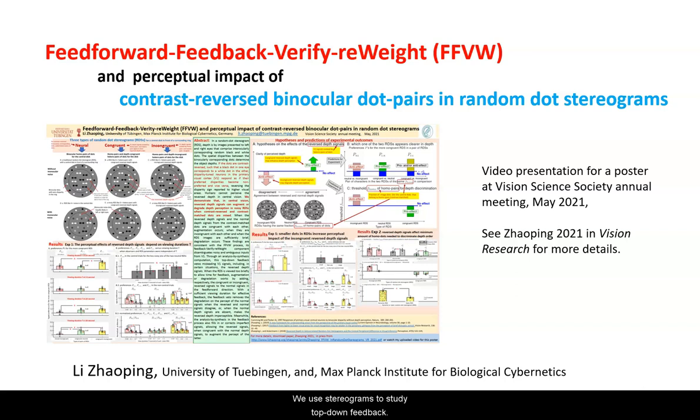We use stereograms to study top-down feedback. A random dot stereogram for a central disk in front of a surrounding ring is made like this.